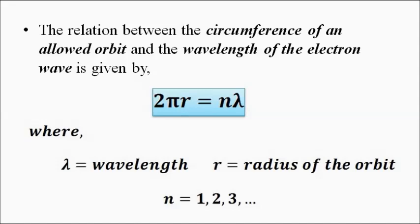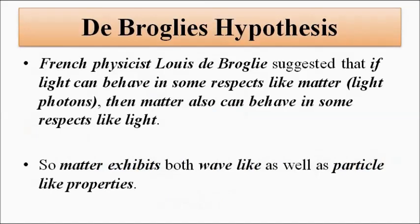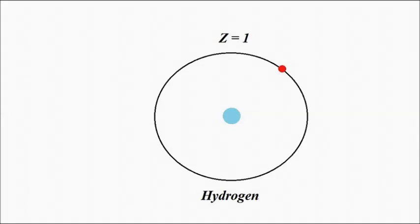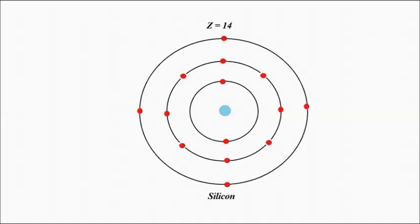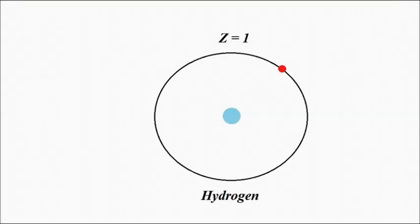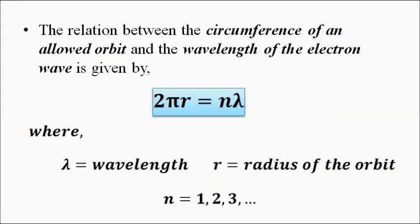This is a very good explanation related to the wave nature of the electron and how the electron behaves in two ways. The de Broglie hypothesis is related to matter exhibiting both wave-like and particle-like properties, and this whole concept was extended to explain why electrons move around the nucleus in fixed specific designated orbits. This is the de Broglie hypothesis extended to electrons orbiting around the nucleus, behaving as stationary waves, and the relationship between the wavelength of the electron wave and the circumference of the allowed orbit.